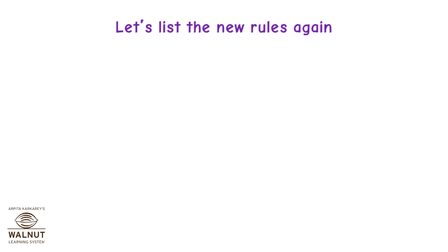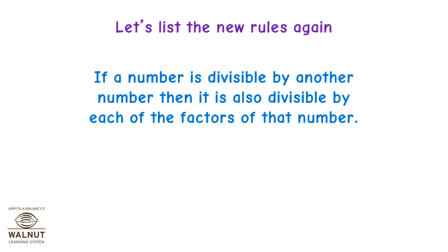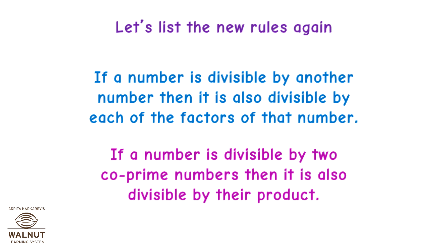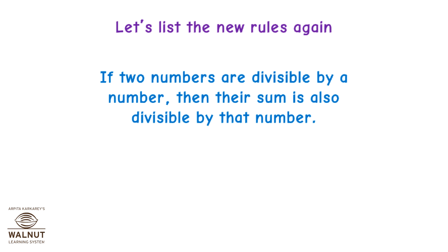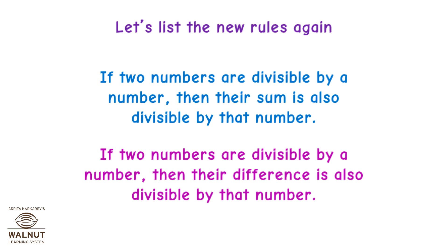Let's list the new rules again. If a number is divisible by another number, then it is also divisible by each of the factors of that number. If a number is divisible by two co-prime numbers, then it is also divisible by their product. If two numbers are divisible by a number, then their sum is also divisible by that number. If two numbers are divisible by a number, then their difference is also divisible by that number.